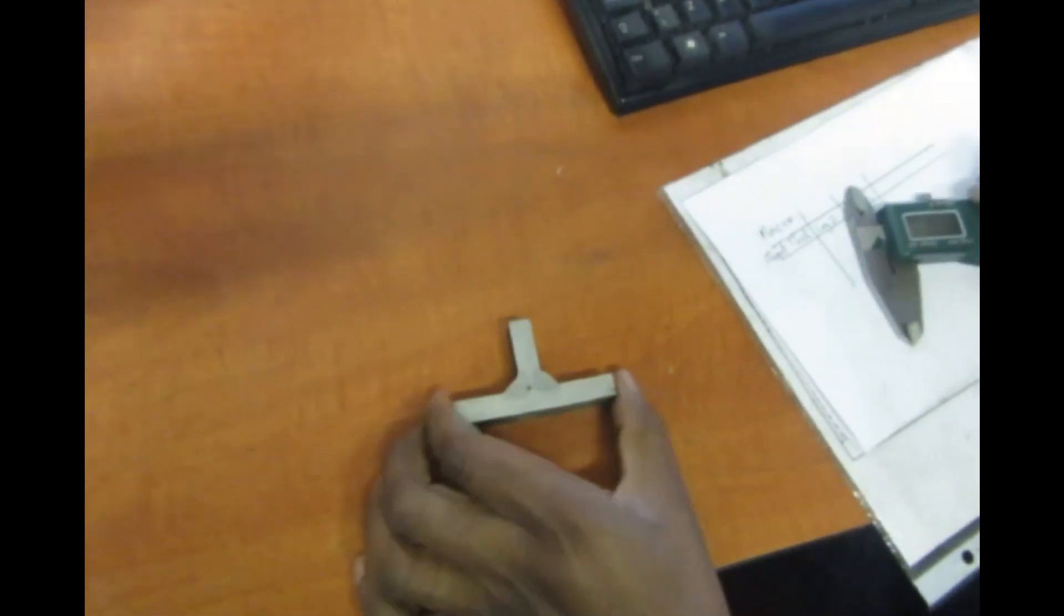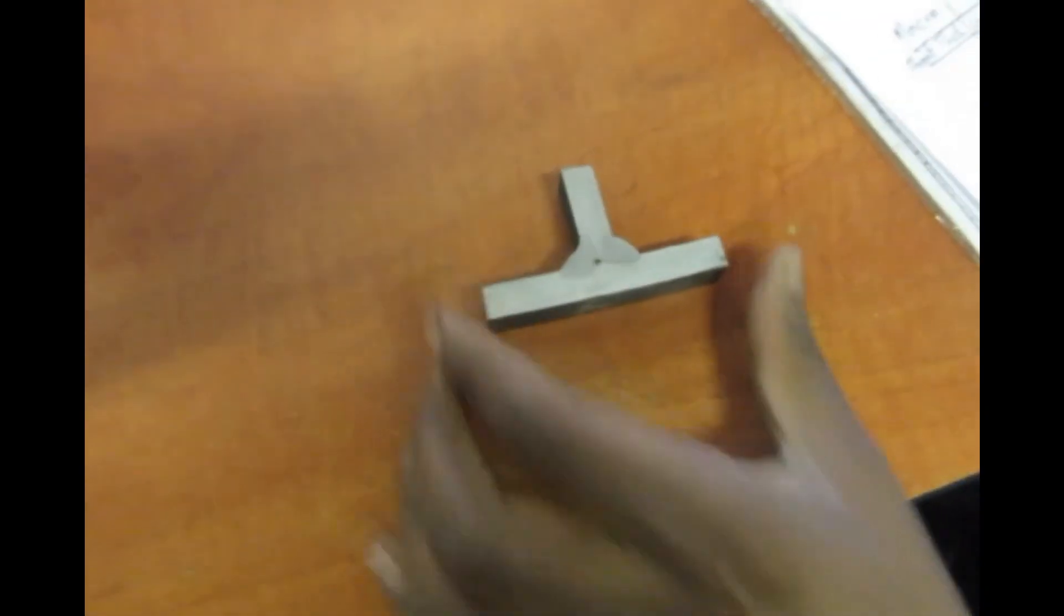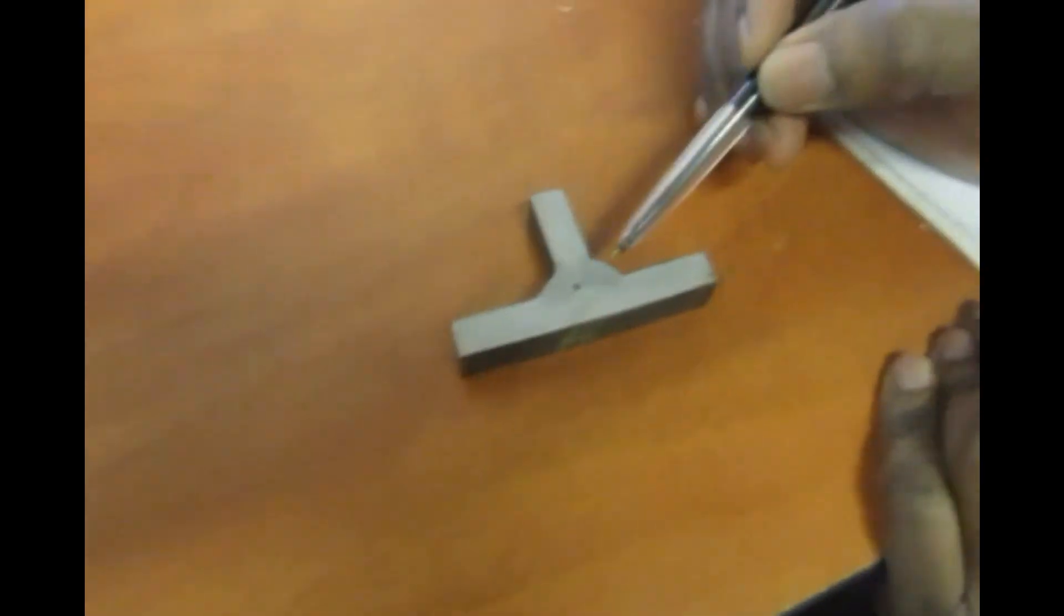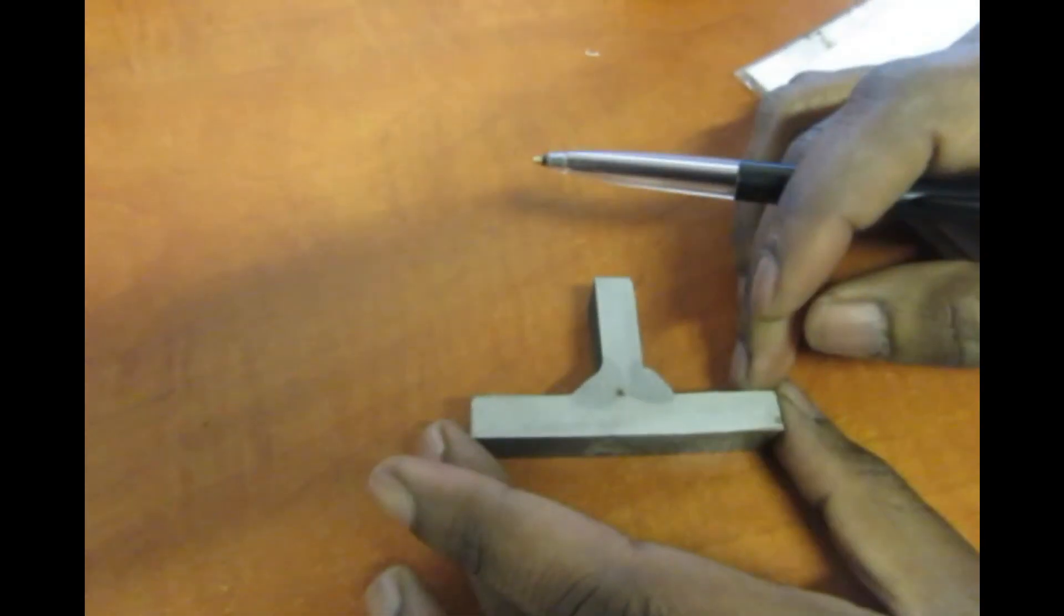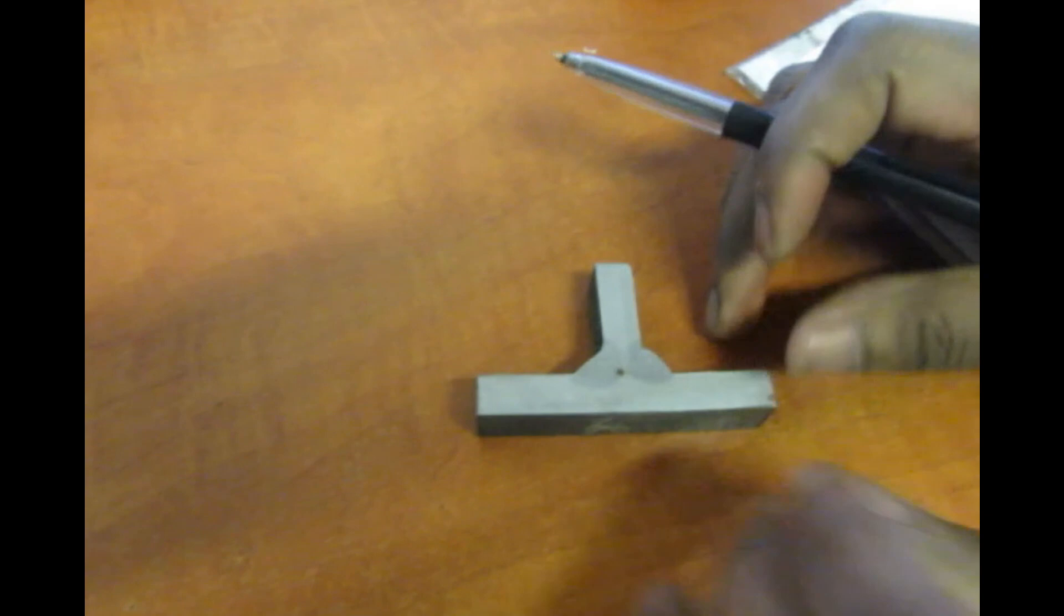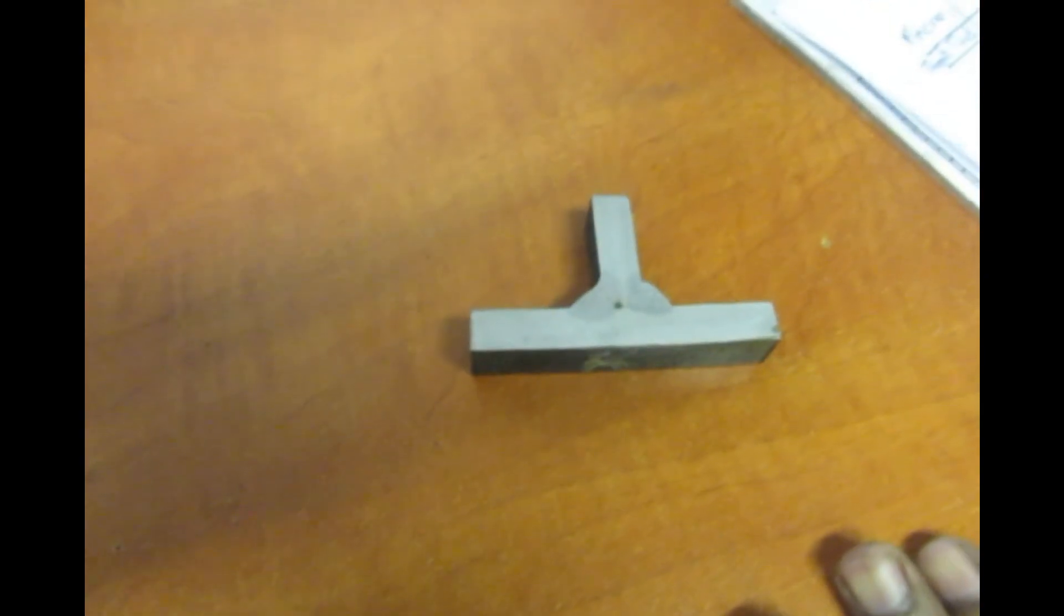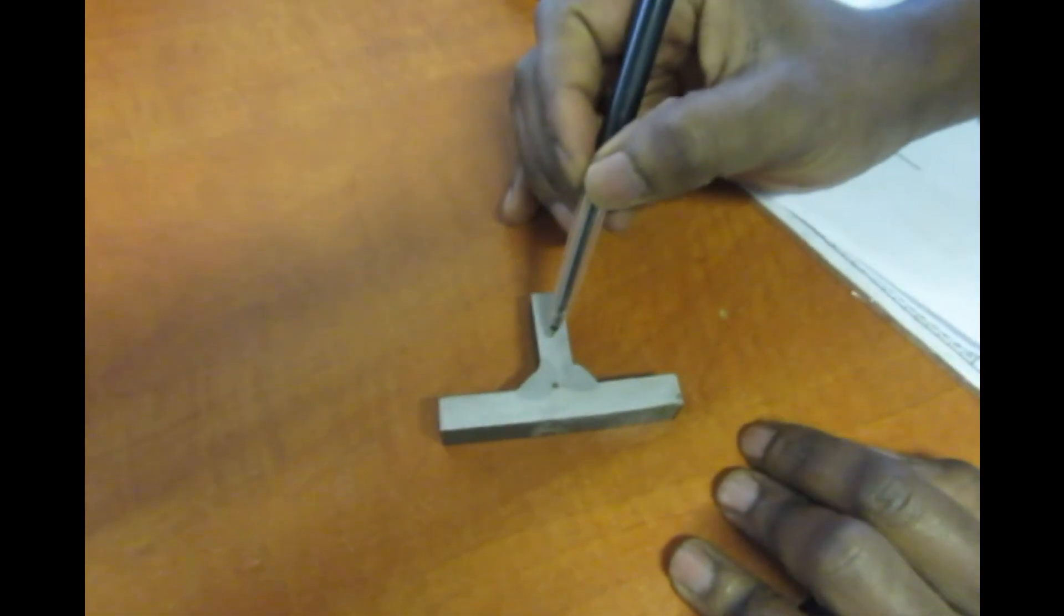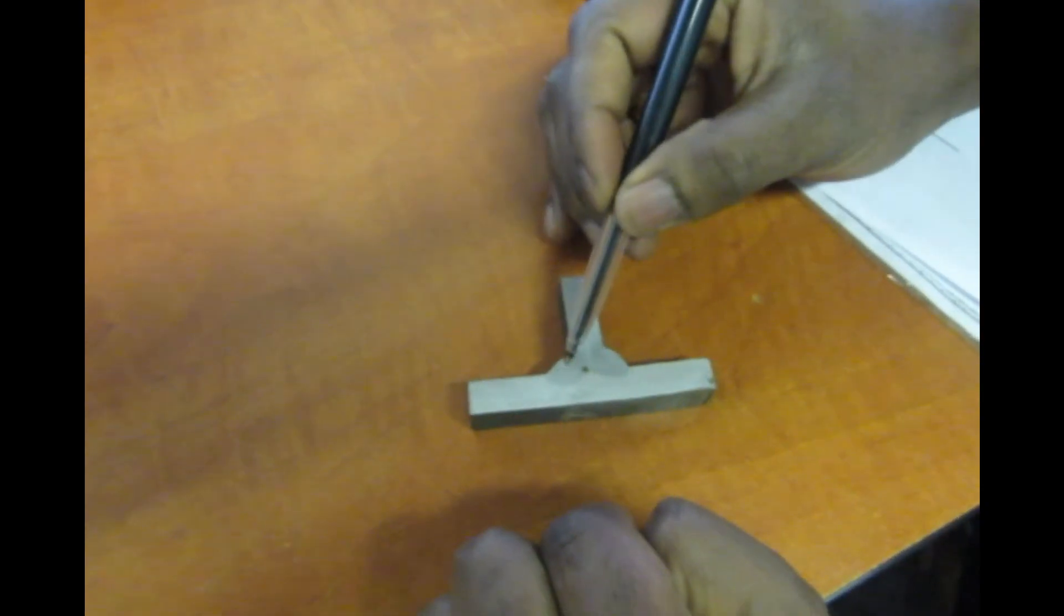Earlier I was explaining how to etch a macro. This is a macro with two welds. Now I want to do my process examination. What I'm trying to do is check if there is full penetration or full fusion between the parent metal and the weld. I'm going to draw a line there, as straight as possible.